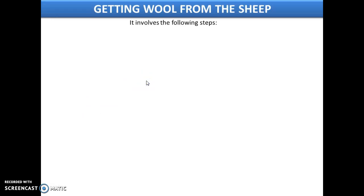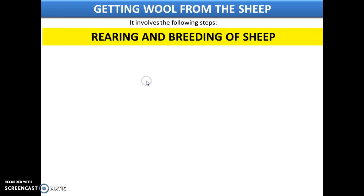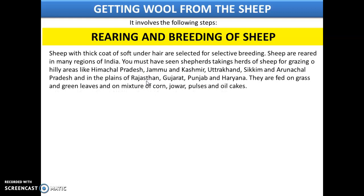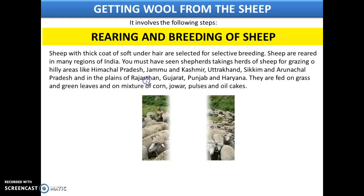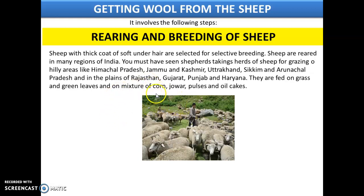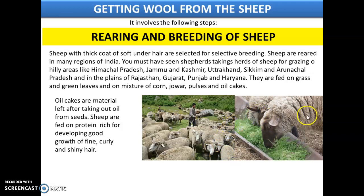Getting wool from sheep involves several steps. Step 1 is rearing and breeding. Sheep with a thick coat of soft under-hair are selected by selective breeding. Sheep are reared across many regions of India — in hilly areas like Himachal Pradesh, Jammu & Kashmir, Uttarakhand, Sikkim, and Arunachal Pradesh, and in plains like Rajasthan, Gujarat, Punjab, and Haryana. Sheep are fed on grass, green leaves, corn, jowar, pulses, and oil cakes — protein-rich food that helps develop fine, curly, shiny hair.